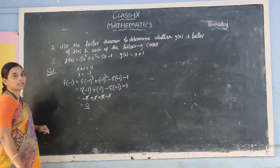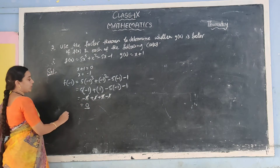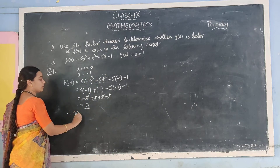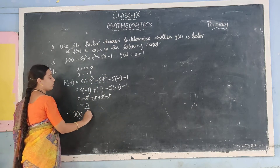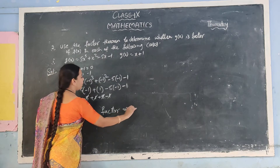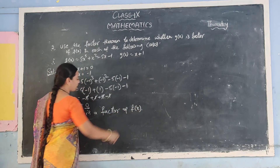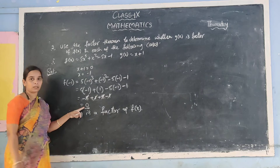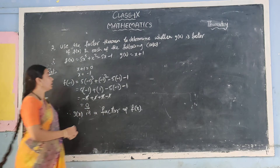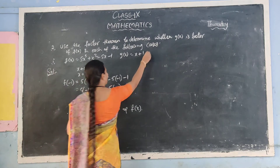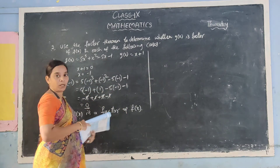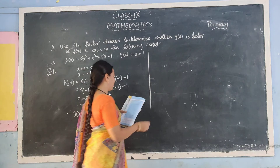We got the answer 0. Therefore, g(x) is a factor of f(x). We got the answer 0, so that is why this is the factor of f(x). Next — here I have totally 5 questions given. Just 3 questions I will explain; the remaining 2 we will take as homework. First one finished. Next one is question 4 to 7 — that is in fractional form, so that's why I will explain.